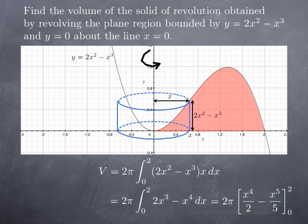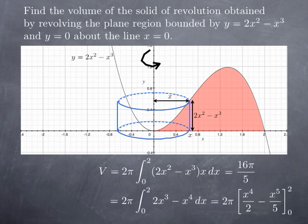An antiderivative is x to the fourth over 2 minus x to the fifth over 5. We evaluate that between 0 and 2. Plugging 2 in, we get 8 minus 32 fifths, in other words 40 fifths minus 32 fifths equals 8 fifths. We multiply that by 2π, and that gives us a volume of 16π over 5.